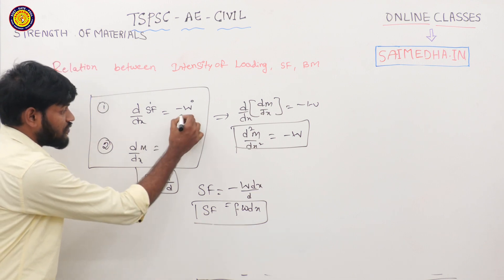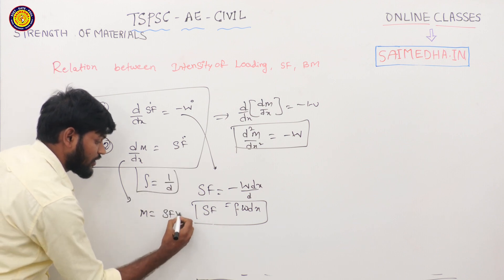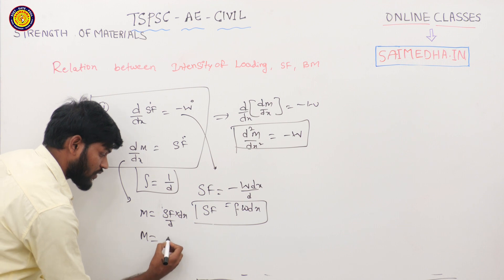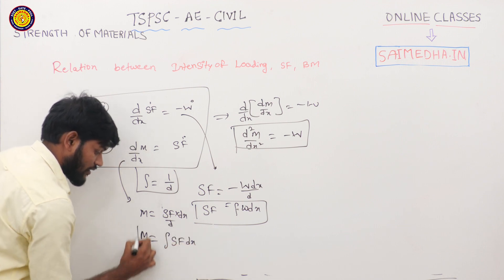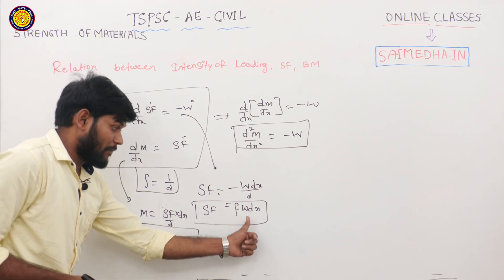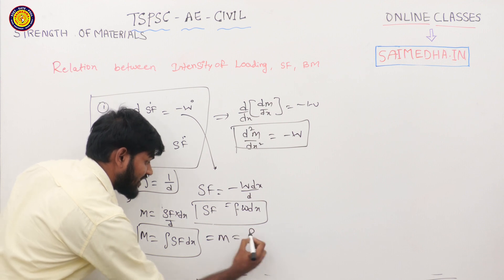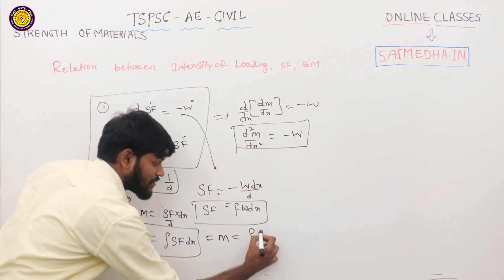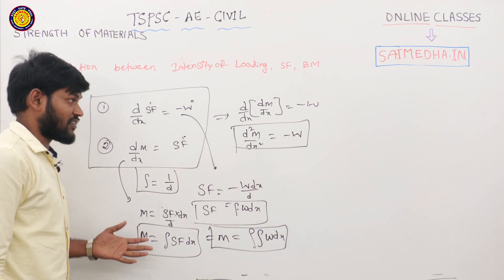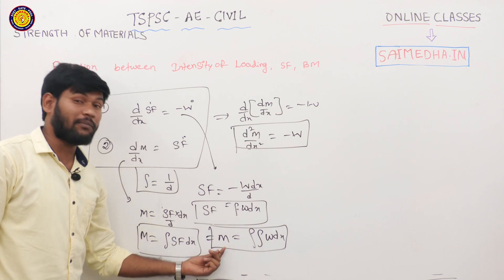Integration is the inverse of derivation. So integrating intensity of loading gives shear force, and integrating shear force gives bending moment. That means M equals double integration of w·dx. Double derivative of bending moment gives intensity of loading, and double integration of loading gives the bending moment at that section.